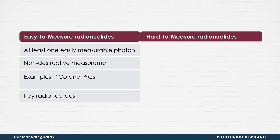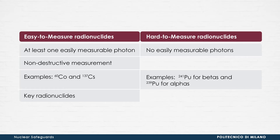On the other hand, radionuclides belonging to the hard-to-measure family do not possess easily measurable photons, as their energy or branching ratio may be too low. Examples of radionuclides belonging to this class are pure beta and alpha-emitting radionuclides, like plutonium-241 for betas and plutonium-239 for alphas.